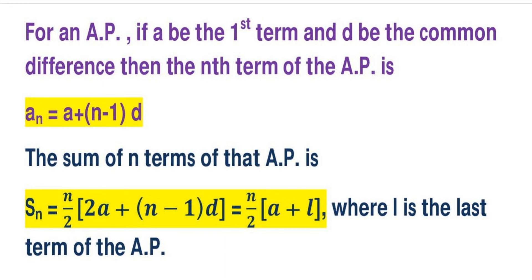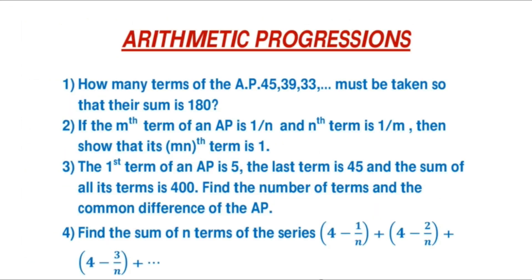You may also write the sum as Sₙ = N/2 × (A + L), where L is the last term. Let's look at question 1: how many terms of the AP 45, 39, 33, … must be taken so that their sum is 180? Assume there are N terms with sum 180, so Sₙ = 180, first term A = 45, and common difference D = 39 − 45 = −6. Apply the sum formula to find the number of terms.